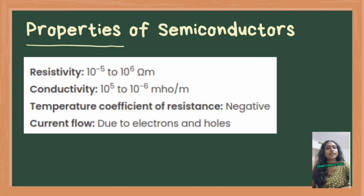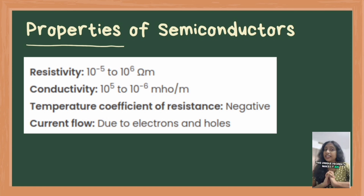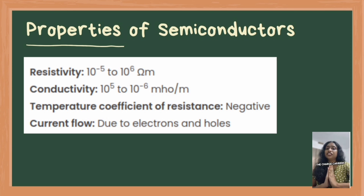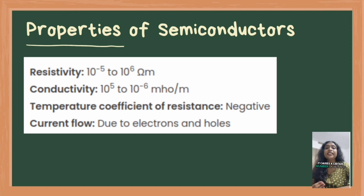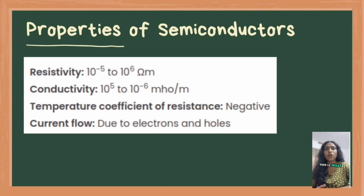Next are the properties of semiconductors. Semiconductors can conduct electricity under preferable conditions or circumstances. This unique property makes them excellent materials to conduct electricity in a controlled manner as required. Unlike conductors, the charge carriers in semiconductors arise only because of external energy — for example, thermal agitation. This causes a certain number of valence electrons to cross the energy gap and jump into the conduction band, leaving an equal number of unoccupied energy states, i.e., holes. The conduction due to electrons and holes is equally important.